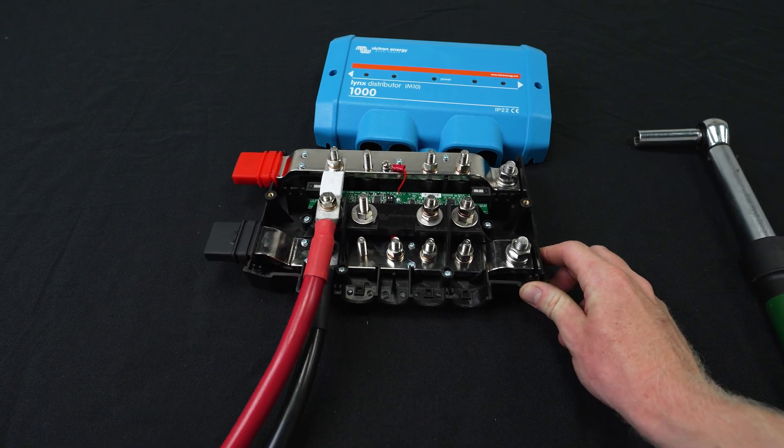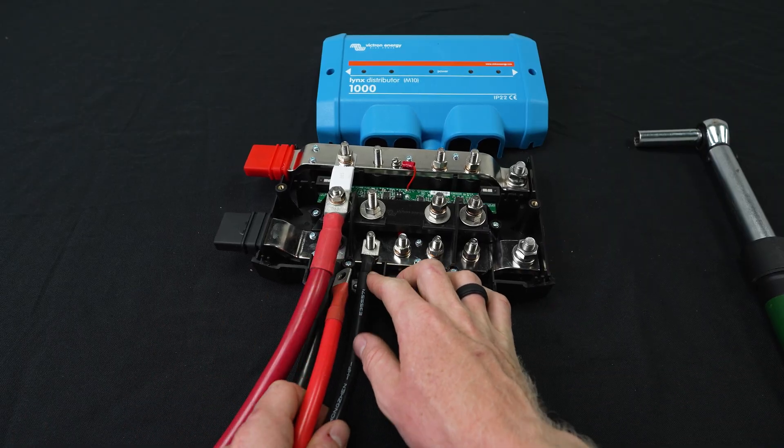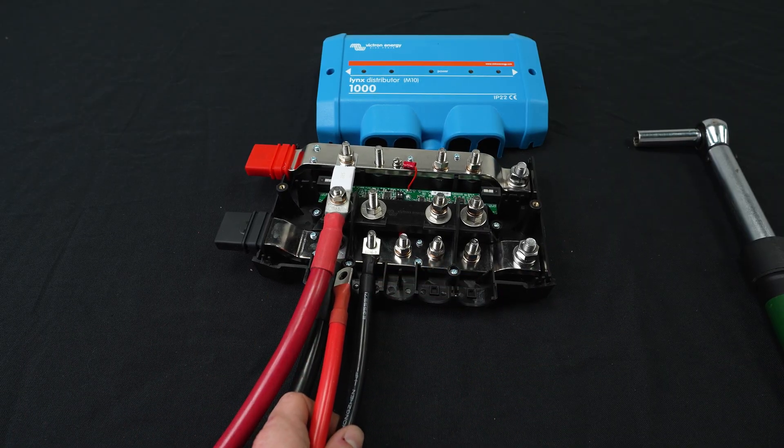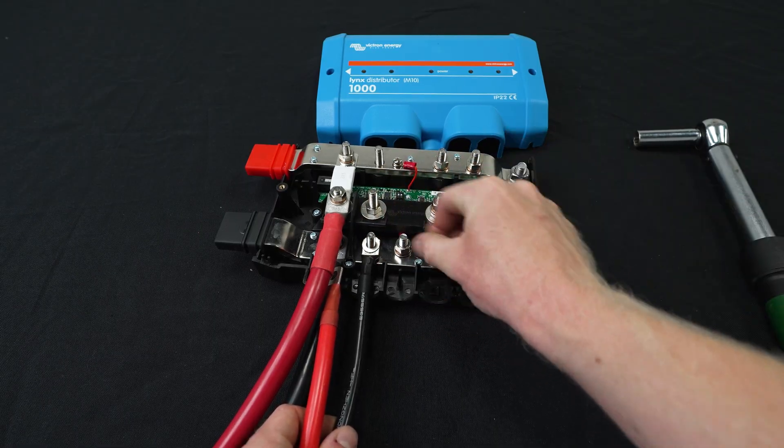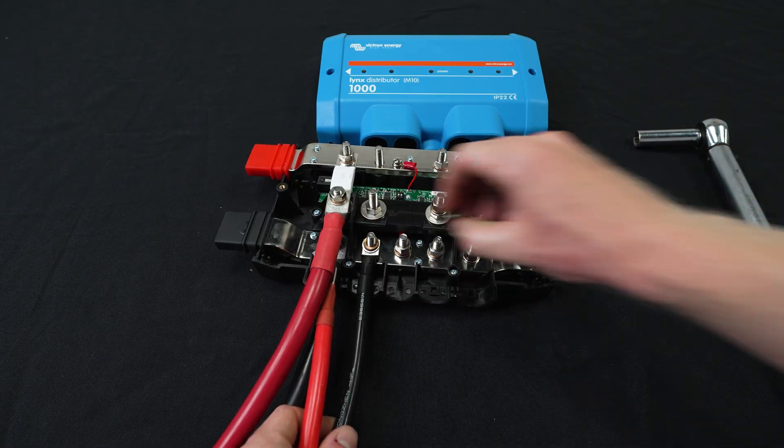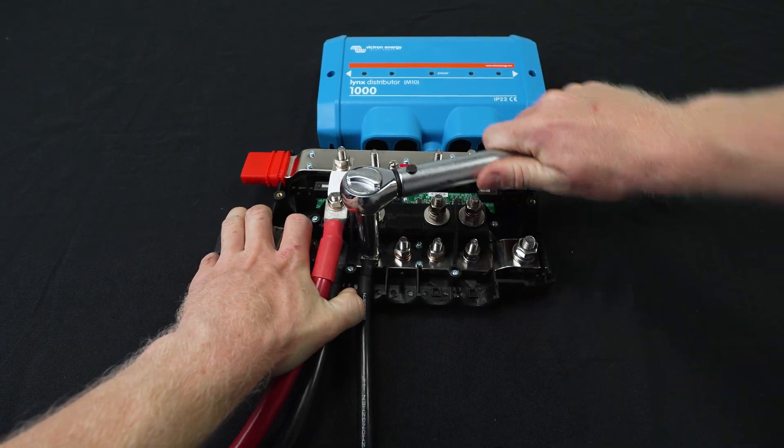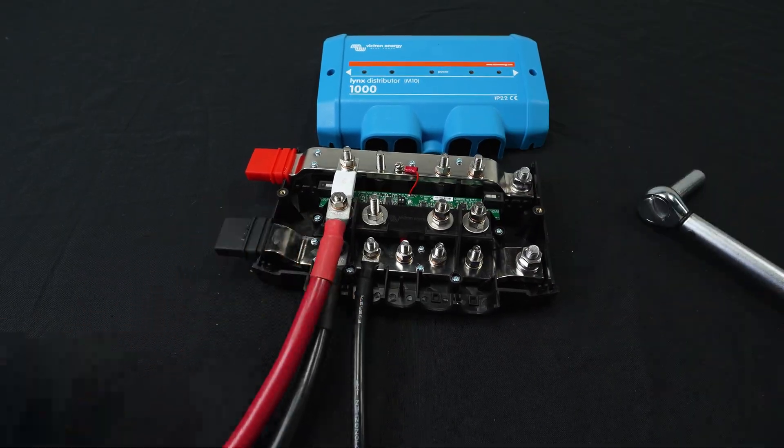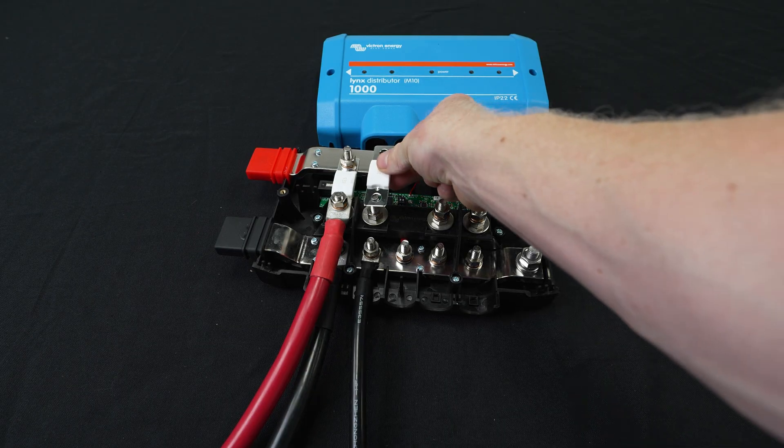All right, first one done. So we're going to do one more just for example. Next we're going to use a 2 gauge wire. Again 5/16 slugs, flat washer, lock washer, and our nut. For our 2 gauge wire, I'm using a 150 amp fuse.